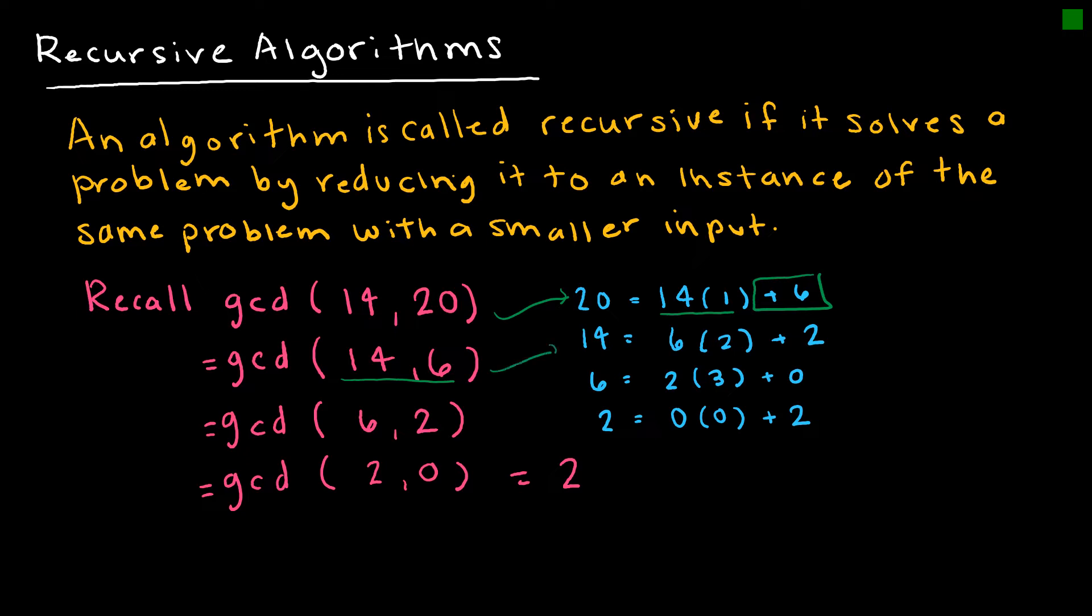And then I repeat that process and I get 6 and 2. And then I say, okay, that's equal to the GCD of 6 and 2. And then I do that again and say, okay, that is equal to the GCD of 2 and 0. And therefore, my GCD is 2.